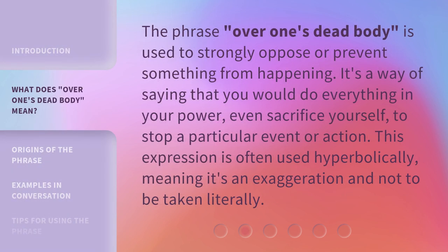The phrase 'over one's dead body' is used to strongly oppose or prevent something from happening. It's a way of saying that you would do everything in your power, even sacrifice yourself, to stop a particular event or action. This expression is often used hyperbolically, meaning it's an exaggeration and not to be taken literally.